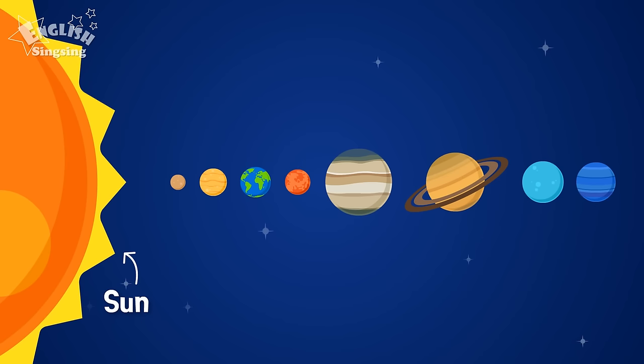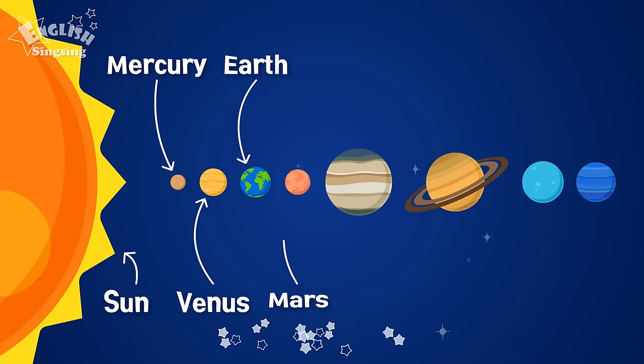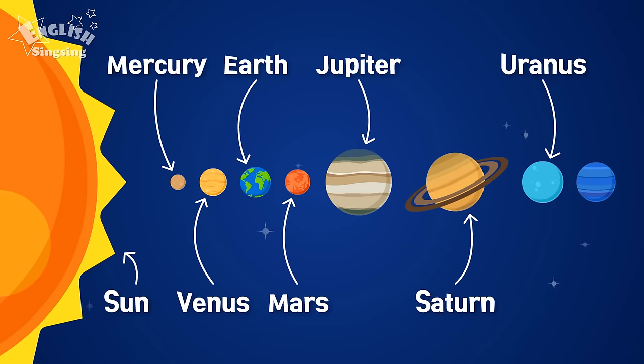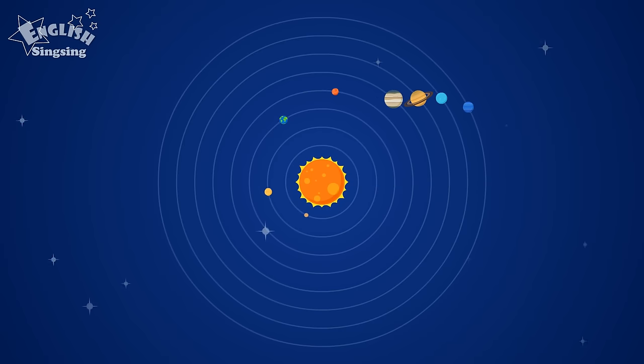Sun, Mercury, Venus, Earth, Mars, Jupiter, Saturn, Uranus, Neptune. This is our solar system.